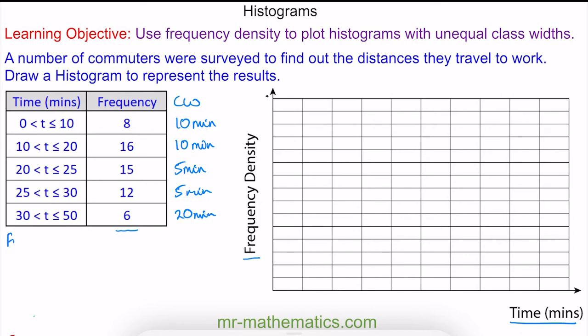To work out the frequency density, which will work out as an area as a product of the frequency density and time, which is measured in minutes.